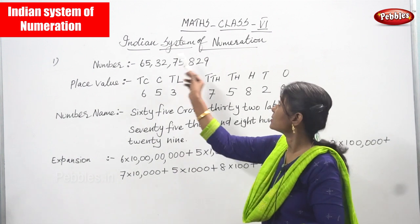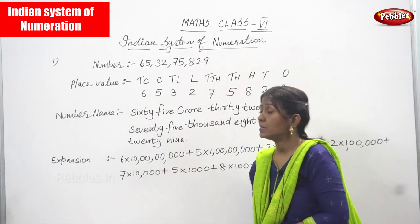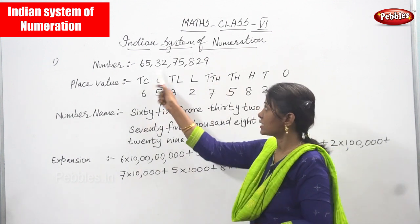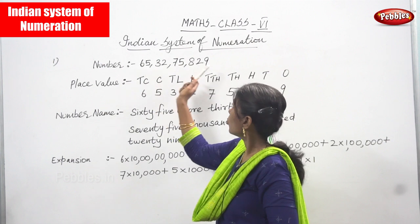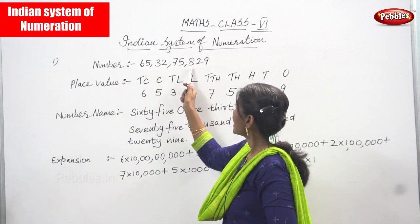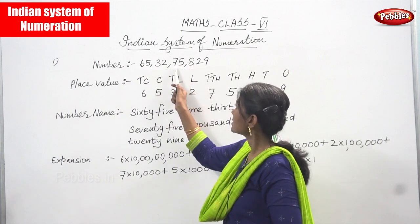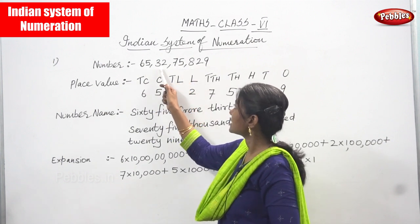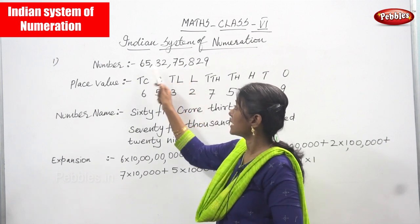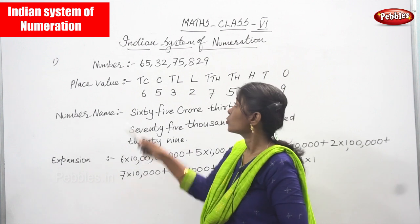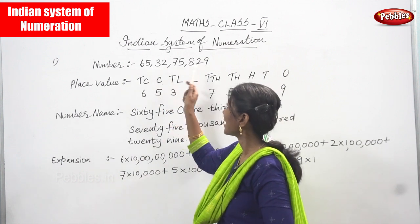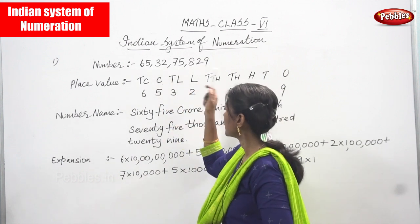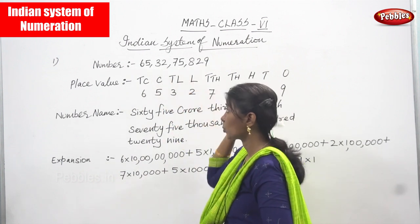Now we are going to see the Indian system of numeration. The place values are: ones, tens, hundred, thousand, ten thousand, lakh, ten lakh, crore, ten crore. The number given is 65 crores 32 lakh 75,829.